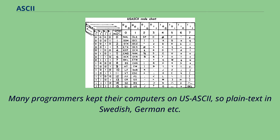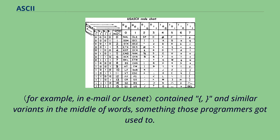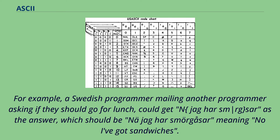Many programmers kept their computers on US ASCII, so plain text in Swedish, German, etc. contained bracket and brace variants in the middle of words, something those programmers got used to. For example, a Swedish programmer mailing another programmer asking if they should go for lunch could get 'Jag Har SM|RG|SAR' as the answer, which should be 'Jag Har smörgåsar' meaning 'No, I've got sandwiches.'